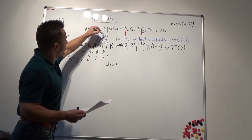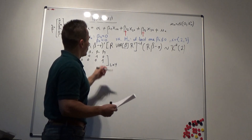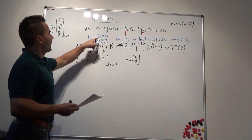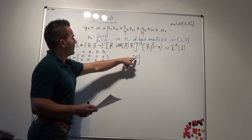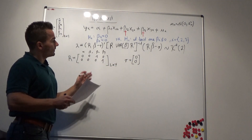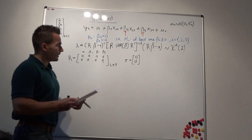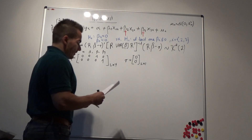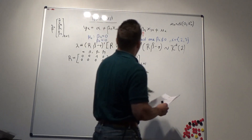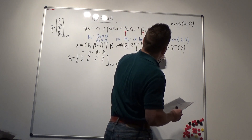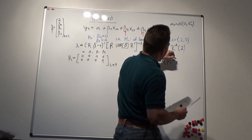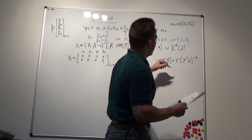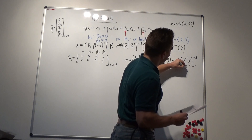The small vector r contains our restriction values, so r = [0, 0]', a 2-by-1 vector. If our hypothesis were that beta2 = 1 and beta3 = 0.5, we would have r = [1, 0.5]'. The variance of our parameter vector is defined as sigma squared times (X'X)^{-1}, which is a 4-by-4 matrix.